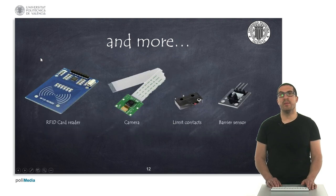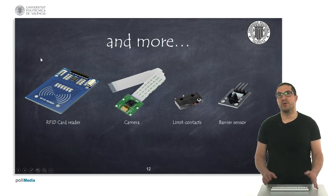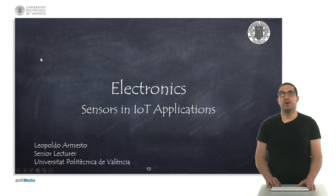Obviously there are many other kinds of sensors that we can use in IoT applications, like RFID card readers, cameras, or different kinds of contact or barrier sensors. This presentation was intended to describe the kinds of sensors we can use in home automation, greenhouse, or weather station projects. Thank you very much, and I hope to see you in my next presentation.